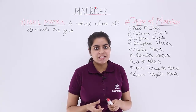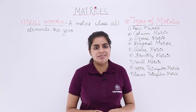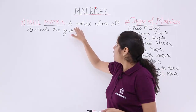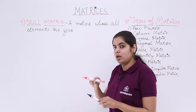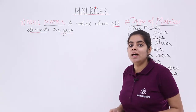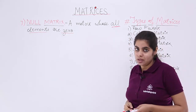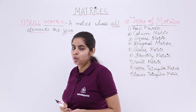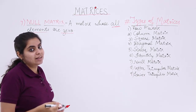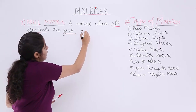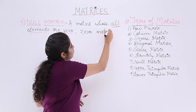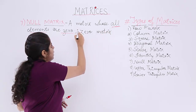Null matrix, as the name suggests, will have all the entries as null — that means zero. A matrix whose all elements are basically zero. Not only one element but all elements should be zero. Since all elements are zero it is called a null matrix, and there is also another name: this matrix is also called a zero matrix.